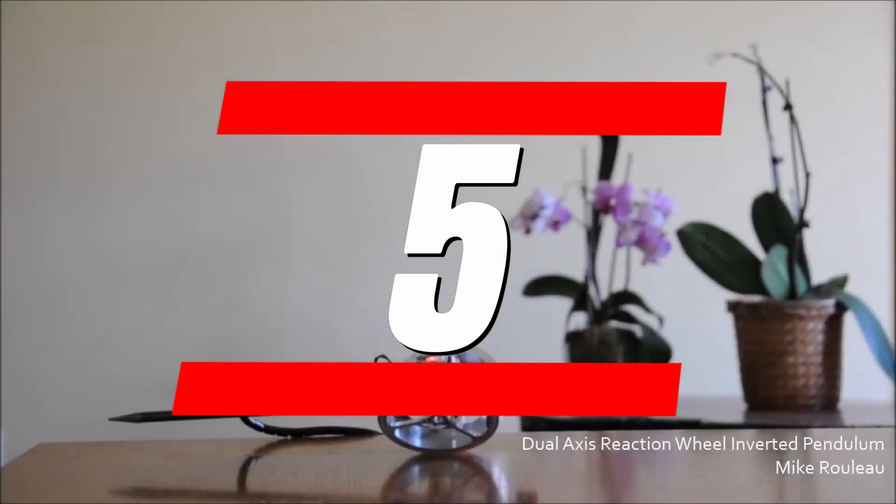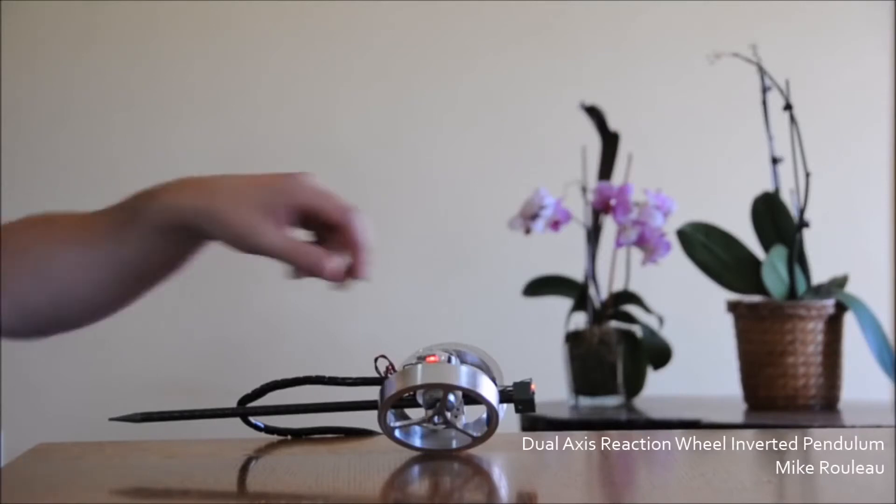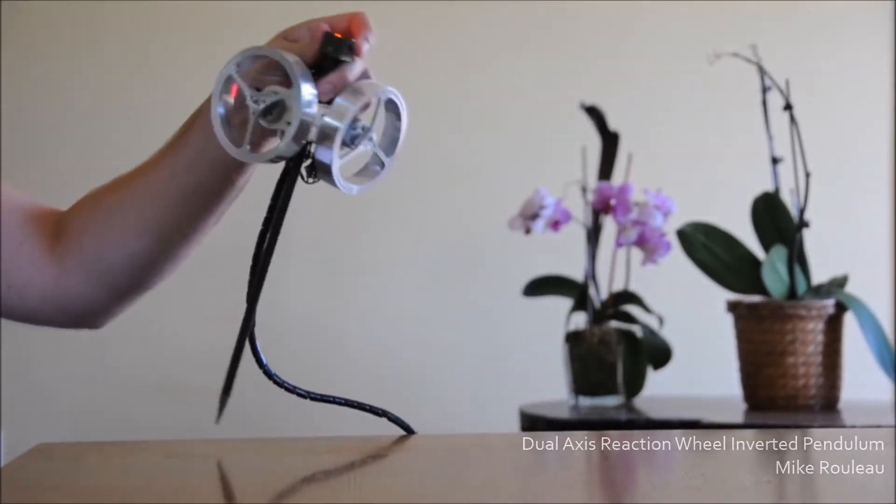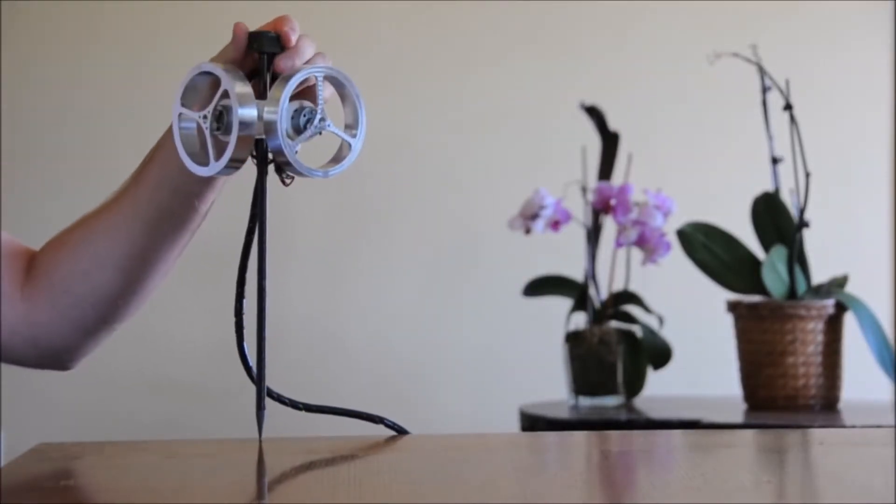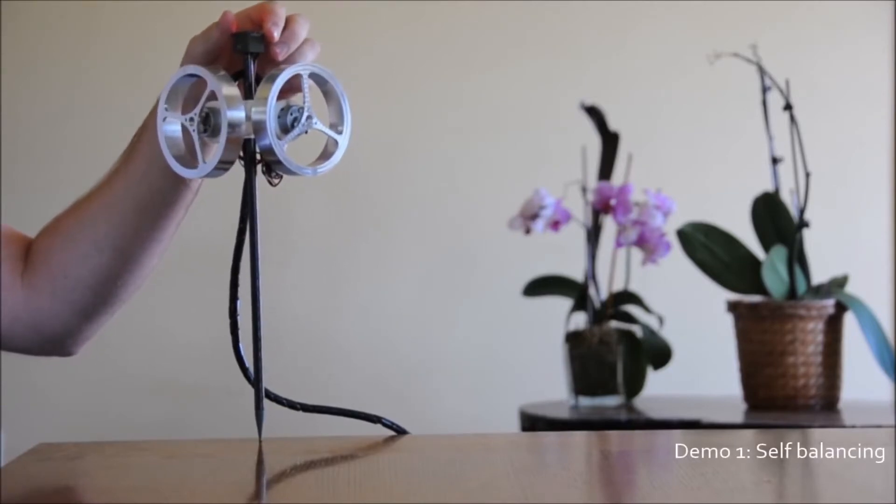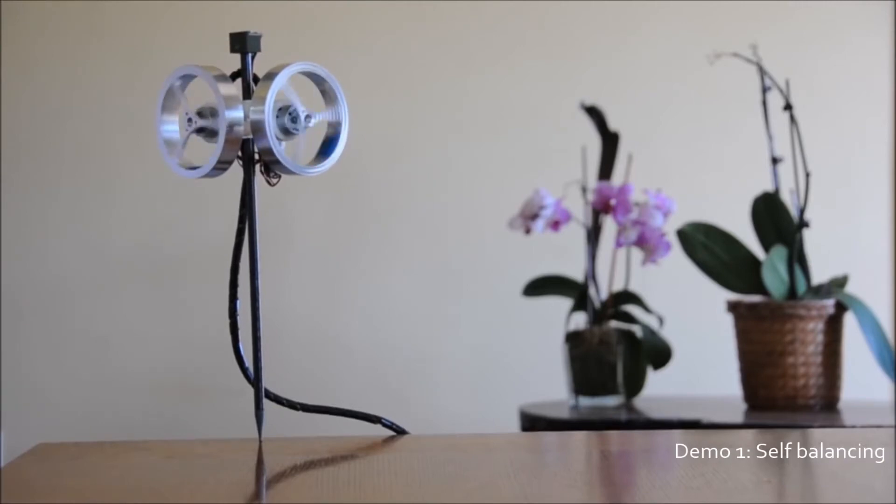Our final project is a fascinating demonstration of how satellites navigate and move through space without any extra physical support. By balancing a stick using two proportional wheels attached on top of it, we're able to give it the torque it needs to remain upright without any external support.